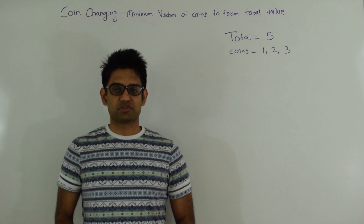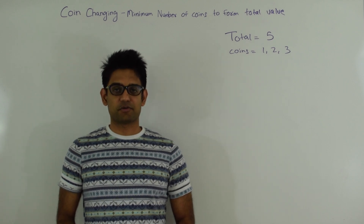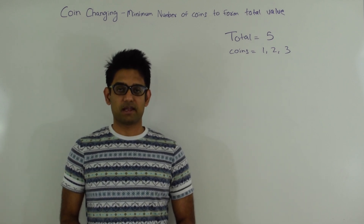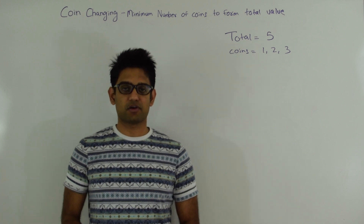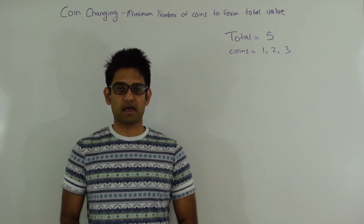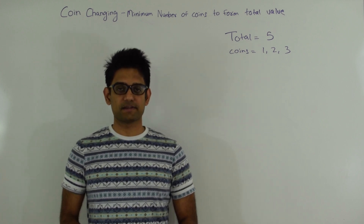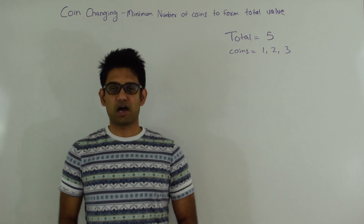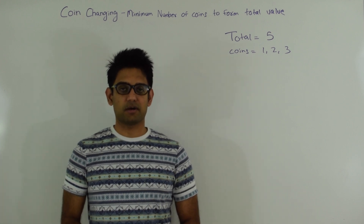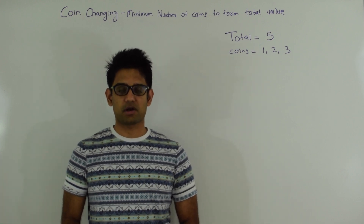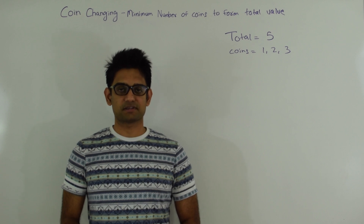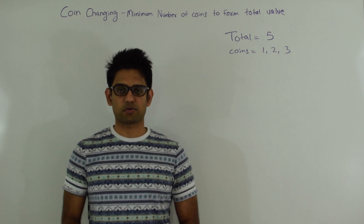Hello friends, my name is Tushar and today I'm going to talk about the coin changing problem. Given a total and coins of certain denominations with infinite supply, what is the minimum number of coins it takes to form this total? In another video I've already discussed how to solve this with bottom-up dynamic programming. In this video I'm going to discuss the top-down dynamic programming approach.